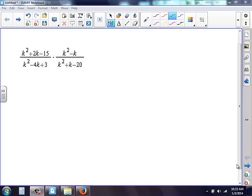Okay, here we're multiplying fractions. We have k squared plus 2k minus 15 all over k squared minus 4k plus 3 times k squared minus k all over k squared plus k minus 20. So it looks pretty difficult.